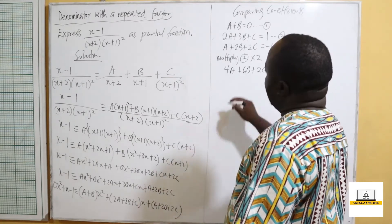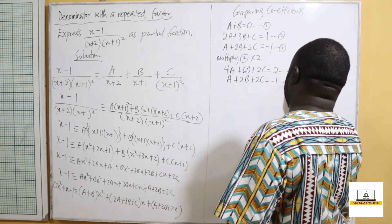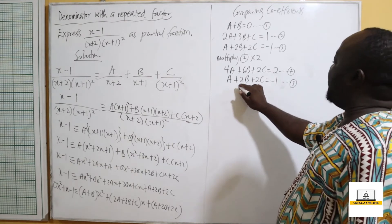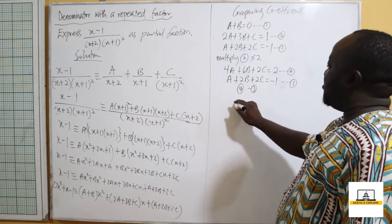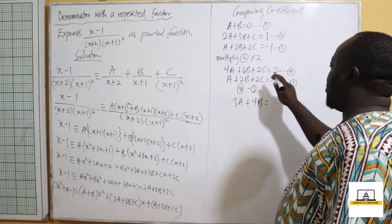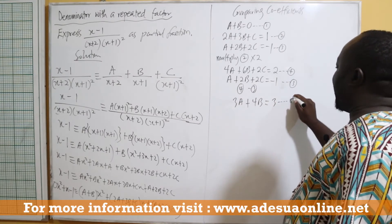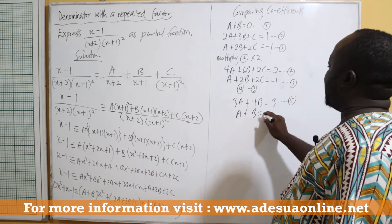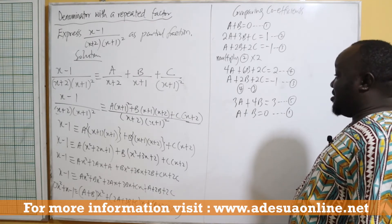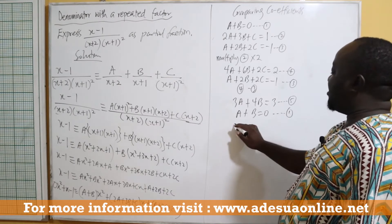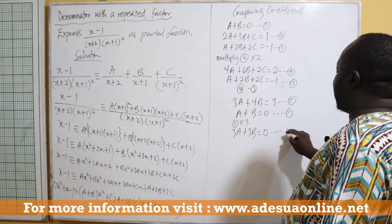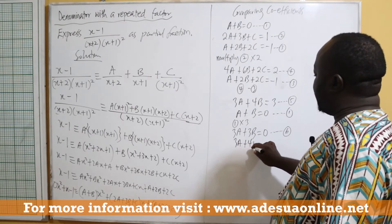Now bring down equation 1: A + B = 0. Multiply equation 1 by 3 to get 3A + 3B = 0, call this equation 6. Bring equation 5: 3A + 4B = 3. Subtracting equation 5 from equation 6: 3A − 3A = 0, and 3B − 4B = −B, and 0 − 3 = −3, so B = 3.